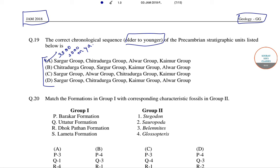The Chitradurga group is about 2700 to 2500 million years ago. Next is the Alva group, which is about 2000 to 1100 million years ago. The last is the Kaimur group, which is about 1150 to 1100 million years ago.